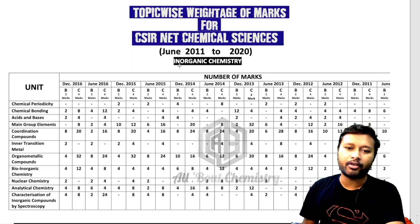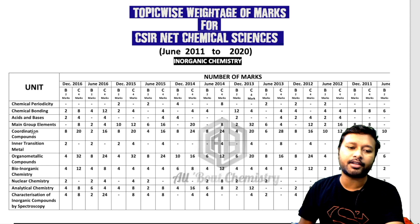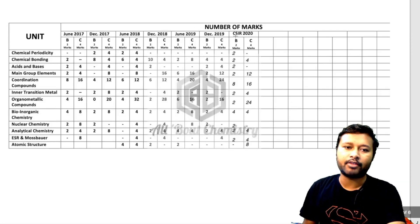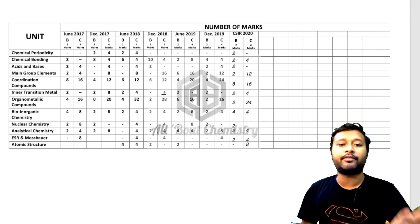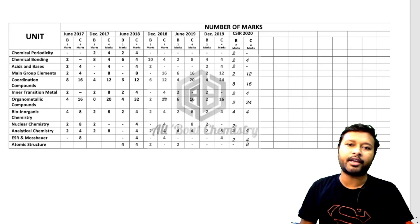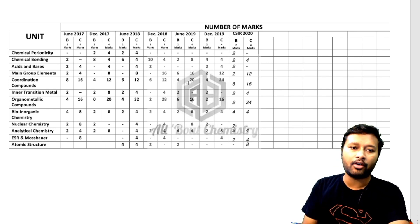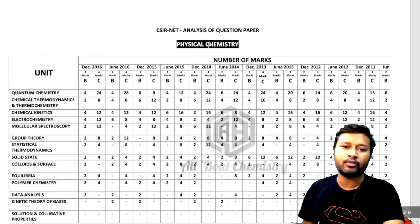For inorganic chemistry, you can see all the important topics listed: chemical periodicity, chemical bonding, acid and base, main group elements, coordination compounds, inner transition metals, and more. It shows how many marks each carries in Part B and Part C for all 10 years of exams. I'll provide a PDF download link in the description for the topic-wise marks distribution.